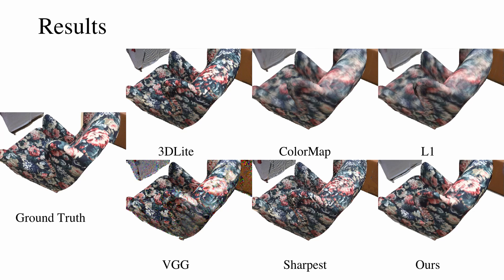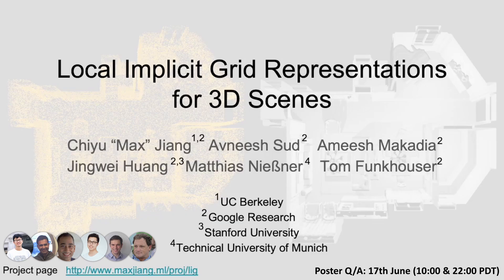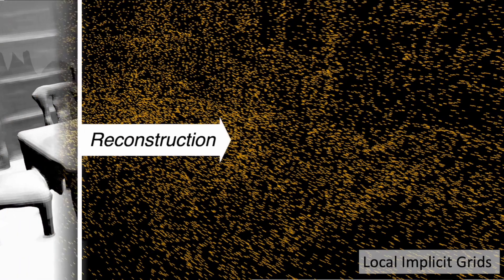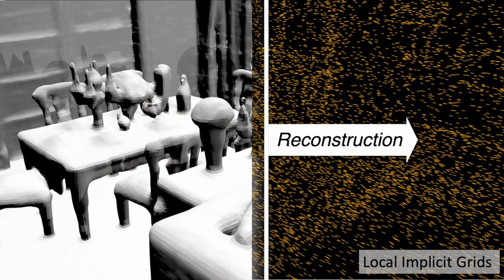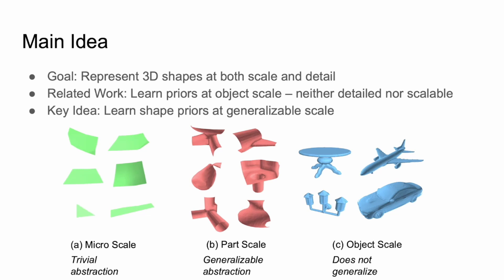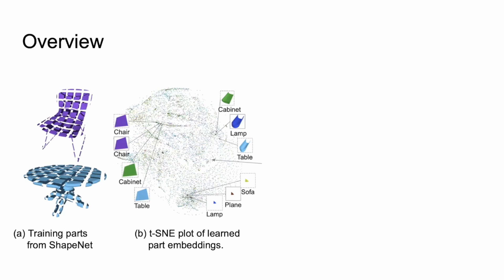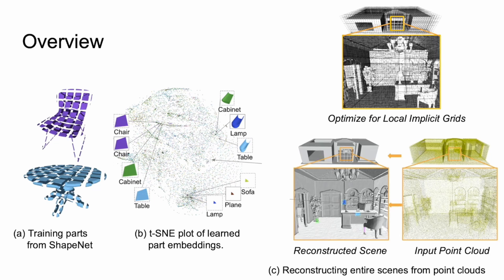Compared to existing methods, our texture solution achieves better quality. We introduce local implicit grid representations, a learnable large-scale implicit shape embedding. Given an input point cloud, our learned 3D representation allows us to reconstruct large 3D scenes at high fidelity and generate high-quality output meshes. The key idea is to learn shape priors at fixed chunk sizes, or the part scale, which provides a generalizable abstraction. We learn an embedding of parts from objects in ShapeNet, training enforces that parts with similar geometries are close in the latent space, then these embeddings are utilized to obtain high-fidelity reconstructions of large 3D environments.